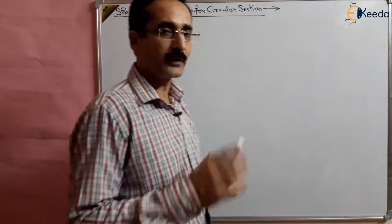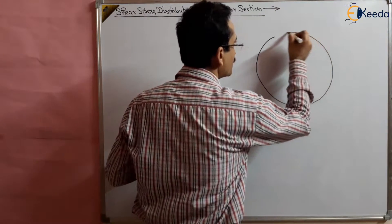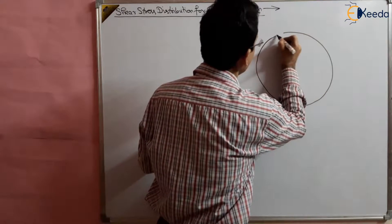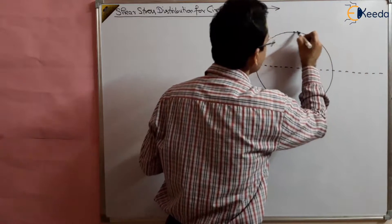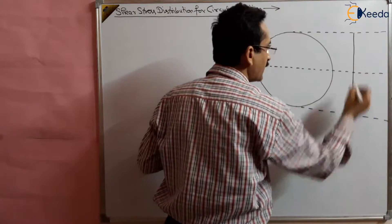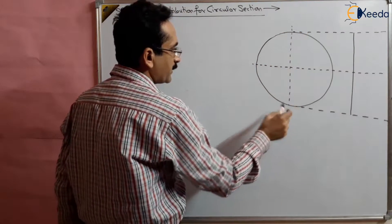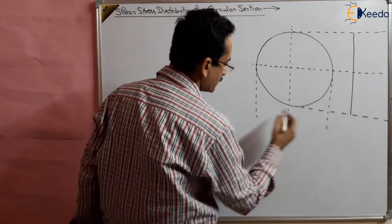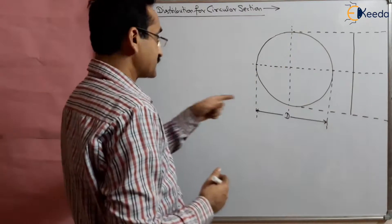We have a circular section and we want to find out the shear stress distribution in that section. Suppose this is a beam of circular section — I have made it bigger — and we have to draw the shear stress distribution for this circular section starting from the top fiber to the bottom fiber. The diameter of this circular section is given as D.